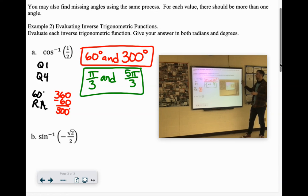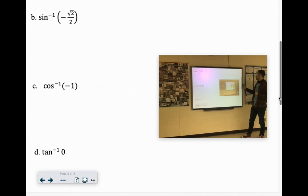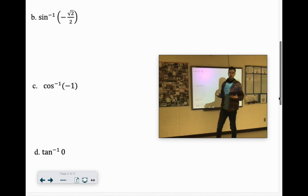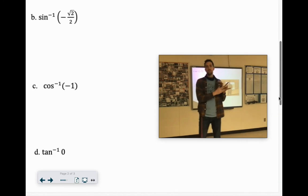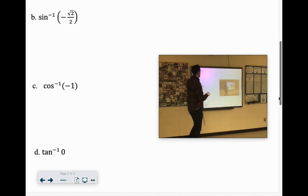All right. B, the inverse of the sine equals negative root 2 over 2. The ones with the root 2 over 2s are obviously the 45-degree reference angles. But we're saying when is sine negative? So sine is our y. When are the y's negative? That would be in quadrant 3 and quadrant 4.